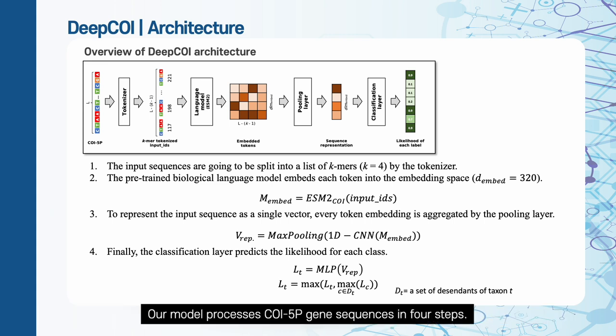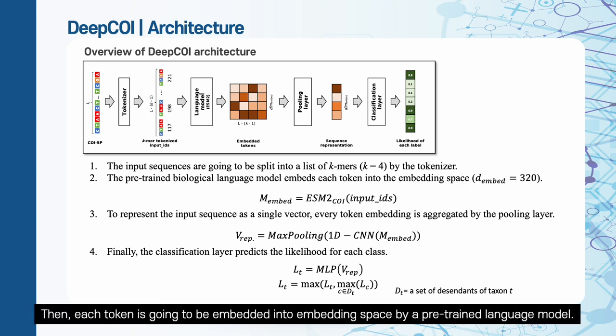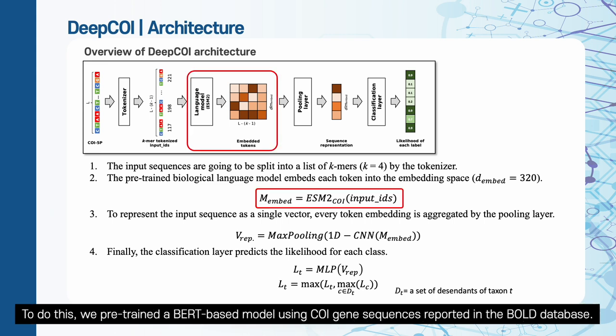Our model processes COI gene sequences in four steps. First, the tokenizer splits the input sequence into a list of k-mers and converts each k-mer into corresponding input IDs. Then, each token is going to be embedded into embedding space by a pre-trained language model. To do this, we pre-trained a BERT-based model using COI gene sequences reported in the BOLD database.